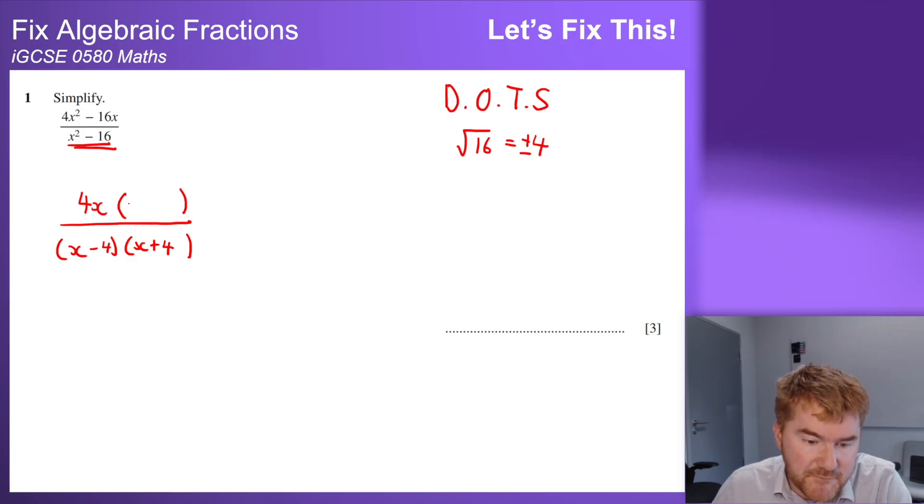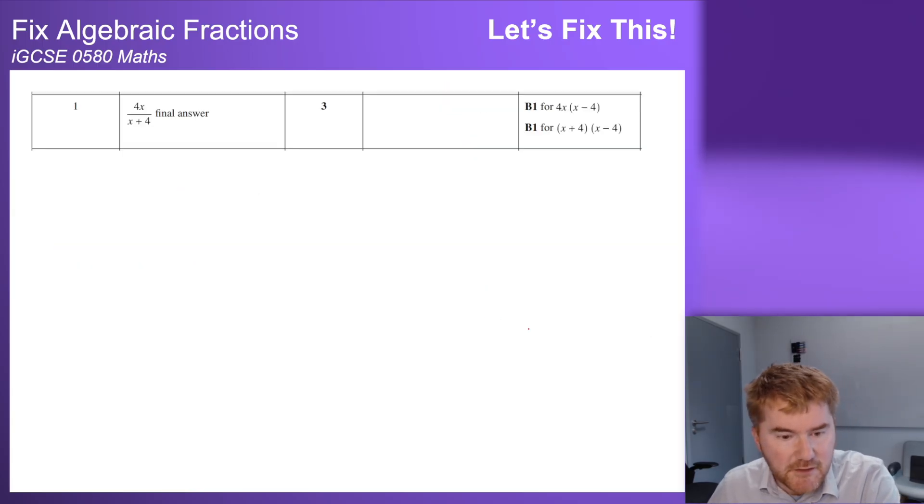And in fact this is an easy example because 4x goes into both of these. So I can put this outside. What do I multiply 4x by to get 4x squared? Just x. What do I multiply 4x by to get minus 16x? Well, minus 4. And notice that now comes up: I have an x minus 4 at the top, x minus 4 down below. I can then cancel, and that gives me our final answer of 4x over x plus 4, which gets me the three marks really quickly. You can have a look at the mark scheme - final answer, three marks. We've got that in the bag where you might have lost those three marks a bit earlier.